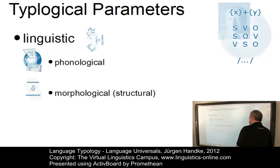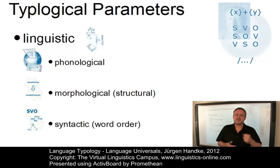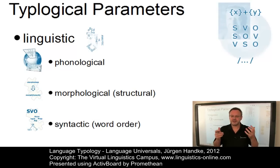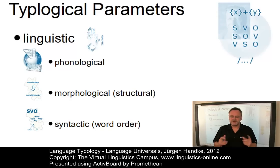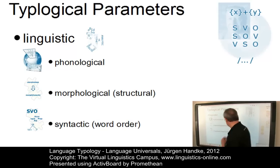The most important syntactic parameter along which languages can be classified is the order of the functional constituents of clause structure — that is, subject, verb, and object. Beyond these major linguistic fields, there are other significant parameters that cross the borderline between linguistics and psychology.